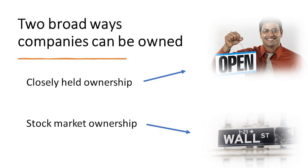Now, let's step back and look at the economy as a whole. We see that there are two very broad ways that companies can be owned: there are closely held approaches to ownership, and there are stock market approaches to ownership. Closely held businesses are owned by specific, restricted groups of people — examples are the coffee shop on your corner, or a family-owned business in your town. In a closely held company, the company's stock is not freely traded; it's not freely bought and sold by the public. Ownership is restricted — it's limited to a person or to a group.